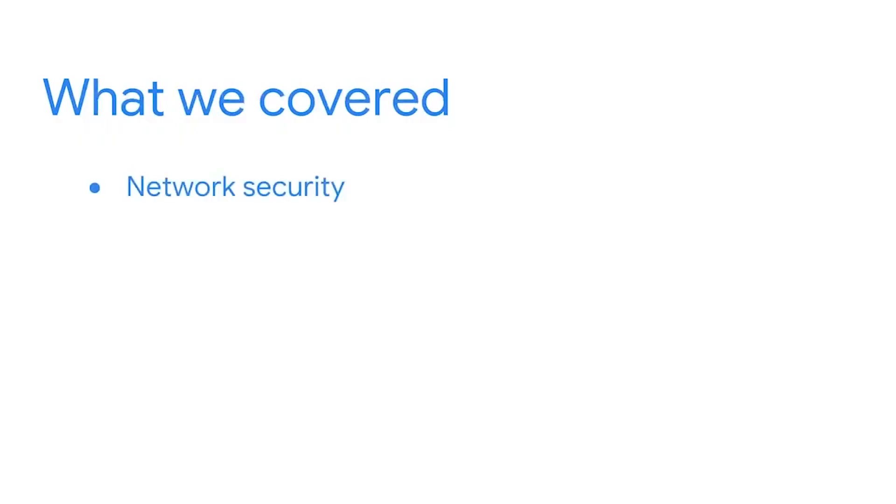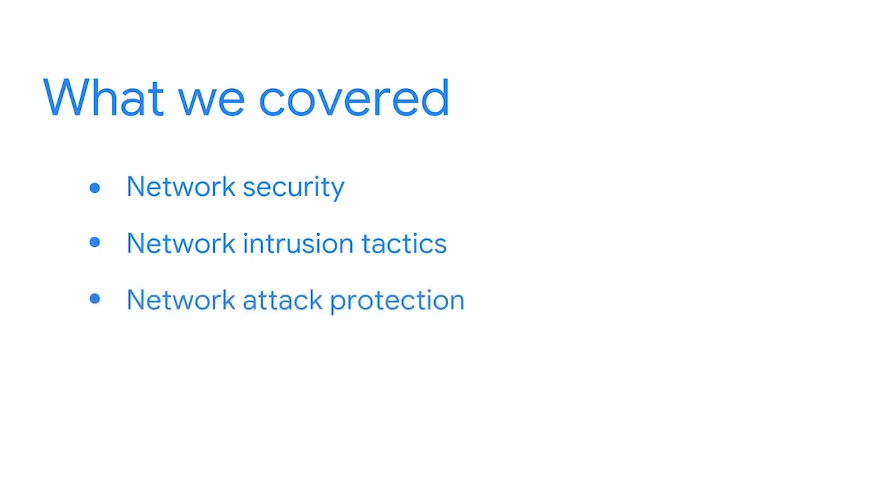That's it for IP spoofing. You've learned how IP spoofing is used in common attacks like on-path attacks, replay attacks, and smurf attacks. Let's review what you've learned: we discussed how to secure networks and learned about network intrusion tactics like malicious packet sniffing and IP spoofing. We also discussed how a security analyst can protect against these kinds of attacks. You've learned about DOS and DDoS attacks like ICMP flooding, SYN attacks, and the ping of death, which try to overwhelm a network by flooding it with unwanted data packets. What you've learned in these videos will be essential in your work as a security analyst.